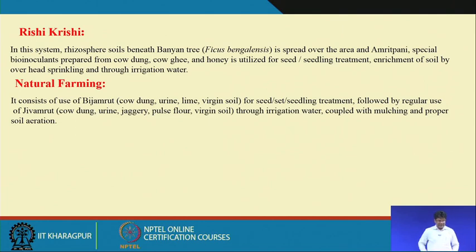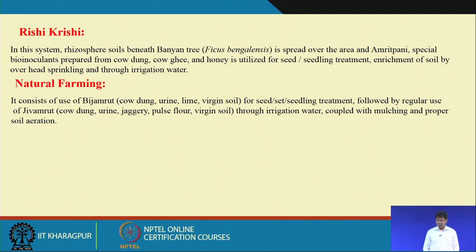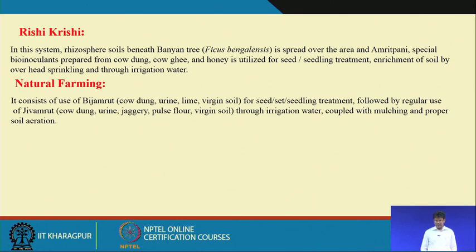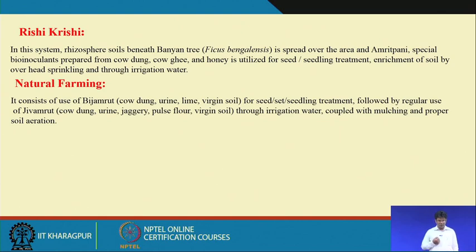Similarly, in the reclysis system, rhizosphere soil from beneath a banyan tree is spread over the crop area. Amritpani, a special bioinoculant prepared from cow dung, cow ghee and honey, is utilized for seed and seedling treatment and enrichment of soil through overhead sprinkling and irrigation water. This has a tremendous effect on crop vigour and developing better growth and development.